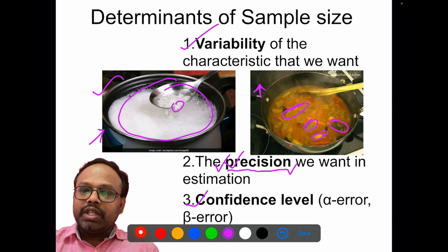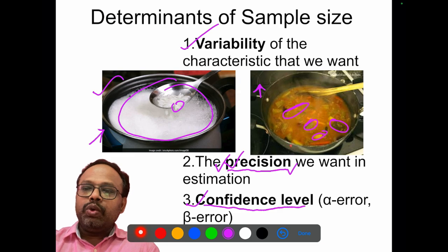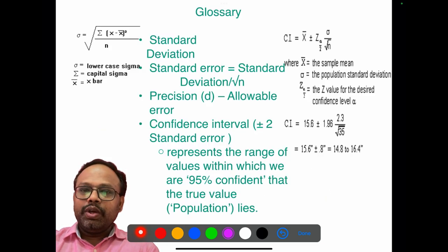Then we need to know about the confidence interval. For that, we need to know about types of errors. We have two types of errors: alpha error and beta error, which will be dealt with in the coming slides.